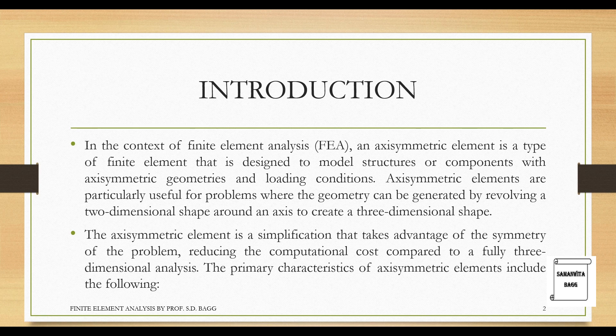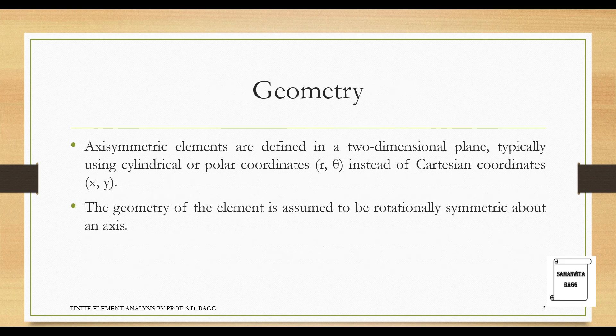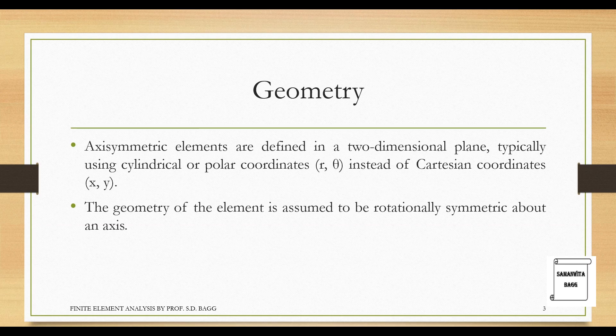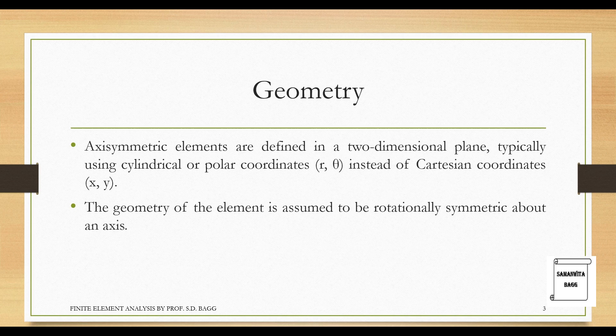The primary characteristics of axisymmetric elements include the following. The first and foremost is geometry. Axisymmetric elements are defined in a two-dimensional plane, typically using cylindrical or polar coordinates, i.e. r theta, instead of Cartesian coordinates x, y.